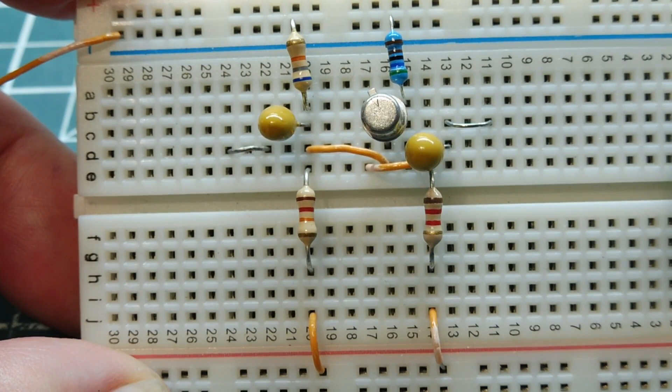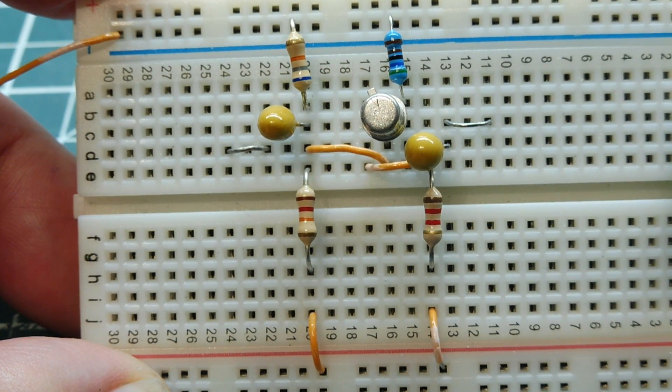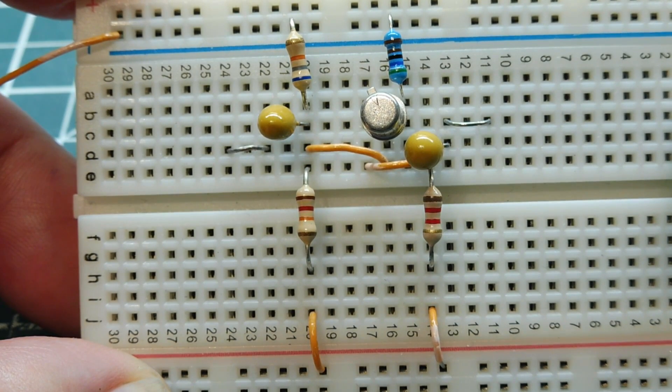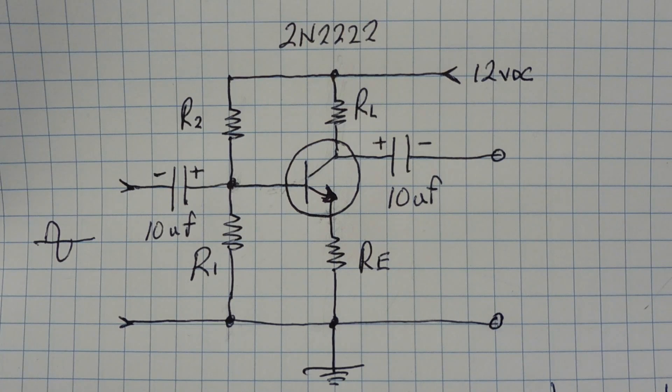In this video we are going to design and build a simple common emitter amplifier, a one transistor gain stage audio amp. We'll be using the four resistor bias configuration so the gain of the amplifier is independent of the beta or HFE of the transistor because we'll be using negative feedback.